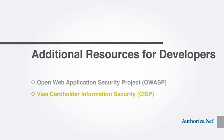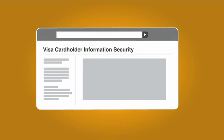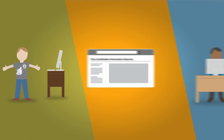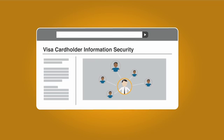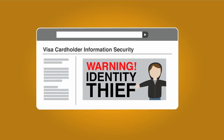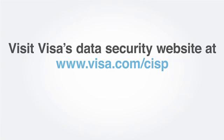The Visa Cardholder Information Security Program maintains a website with multiple resources for merchants and developers. It offers alerts, bulletins, and webinars to help developers better understand their responsibilities related to securing cardholder data. This website is also where Visa issues security alerts when vulnerabilities are detected in the marketplace. Visit Visa's data security website at Visa.com/CISP.